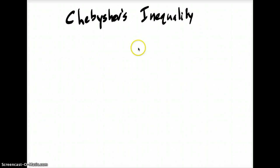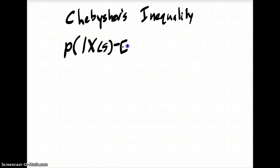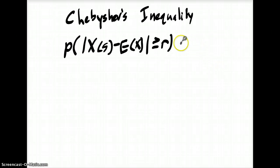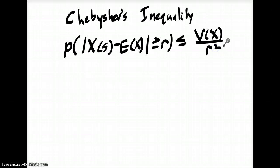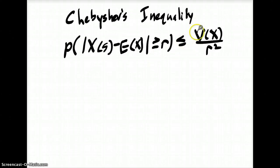Another important thing to look at is Chebyshev's inequality. Chebyshev's inequality basically tells us that the variance helps us determine how far away things will be from the actual expected value. Here's a better way of explaining it with the equation: the probability that the absolute value of X(s) minus the expected value is greater than or equal to r is less than or equal to the variance of X divided by r squared.